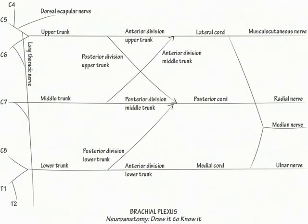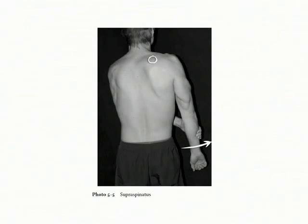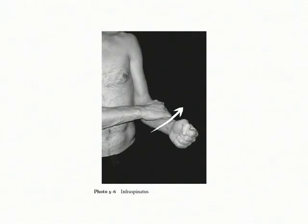Show the suprascapular nerve originate from the upper trunk and innervate the supraspinatus and infraspinatus muscles. Demonstrate that the supraspinatus muscle is responsible for the first 20 to 30 degrees of arm abduction and that the infraspinatus muscle is the primary external rotator of the arm.